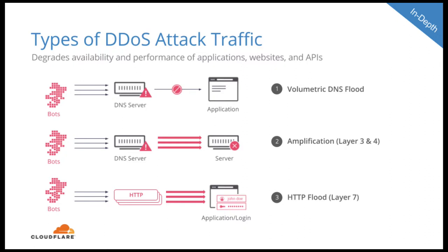Amplification, for example, uses another DNS resolver to amplify requests and overload your servers over UDP. And an HTTP flood is a volumetric HTTP attack to bring down your application. All of these attacks impact the availability and performance of websites, applications, and your APIs.